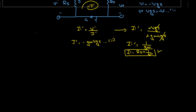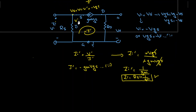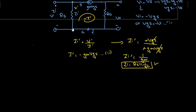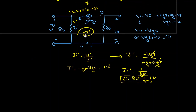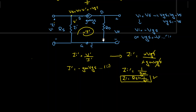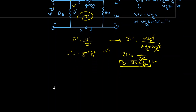To find the output impedance, the input should be shorted. With the input shorted, at the output we only have RD, so the output impedance Z0 is equal to RD. The output impedance has now been found.